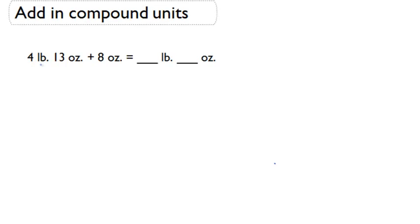We could either turn our 4 pounds into ounces, then have a whole bunch of ounces to all add together, and then we could convert back into pounds, or we can add our ounces separately from our pounds. So let's add our ounces separately from our pounds for this one.